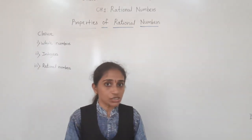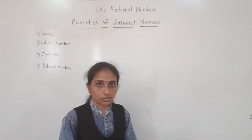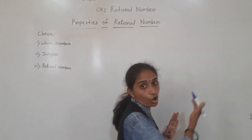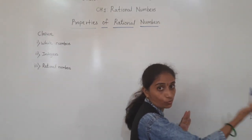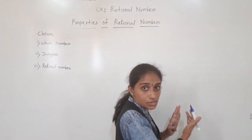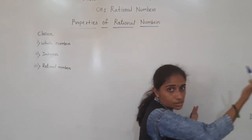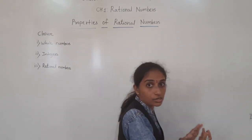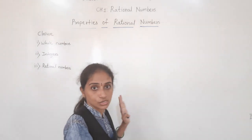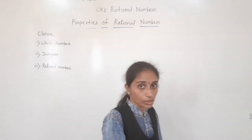What are integers? The numbers which are on the right side of 0 — from 0 — the numbers on the right side of 0 are positive integers, and the numbers on the left of 0 are negative integers.